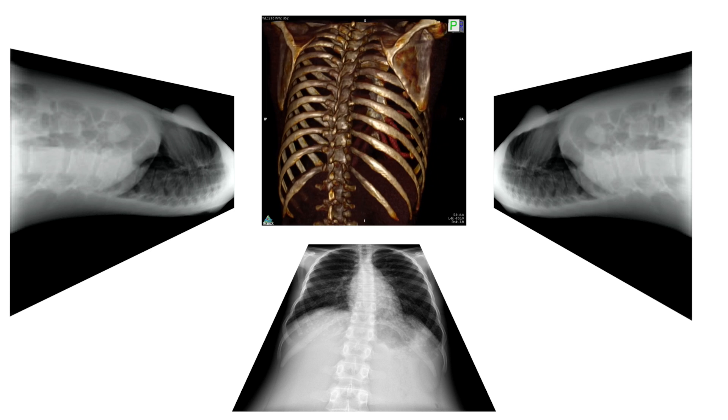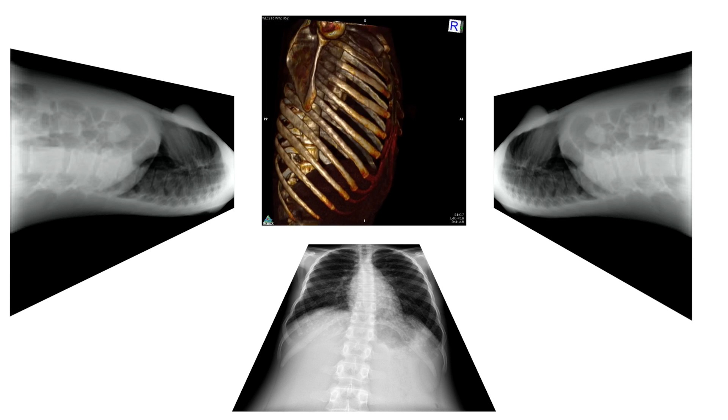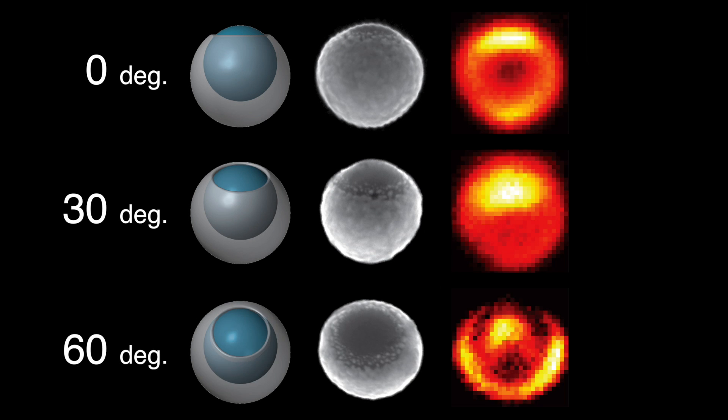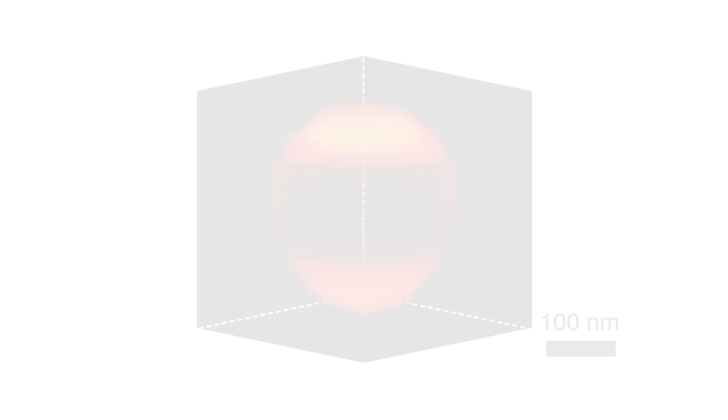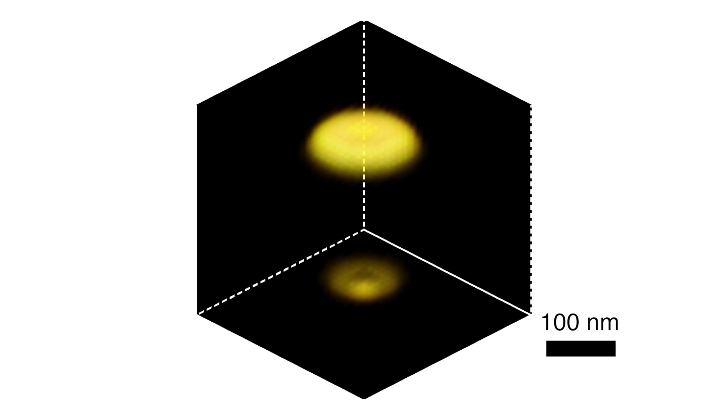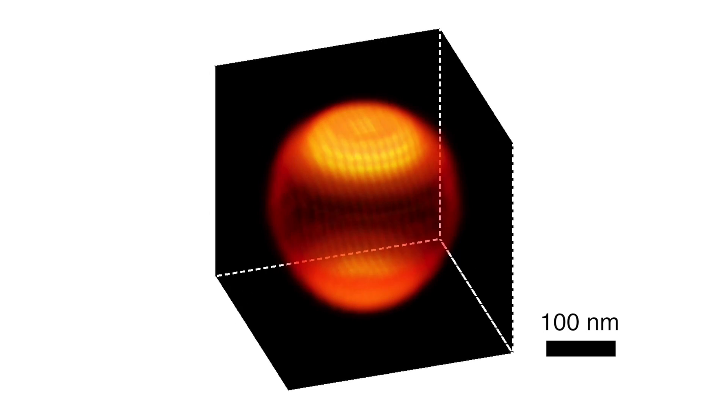Remember that tomography requires a tilt series of 2D images of the object taken at different angles. So, we tilt the crescent and take 2D cathodoluminescence images at 14 different angles. Then, by using tomographic reconstruction algorithms, we can generate a three-dimensional map of how light interacts with our nanoscale particle.